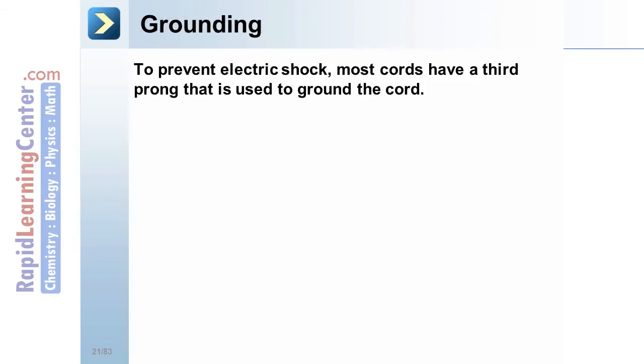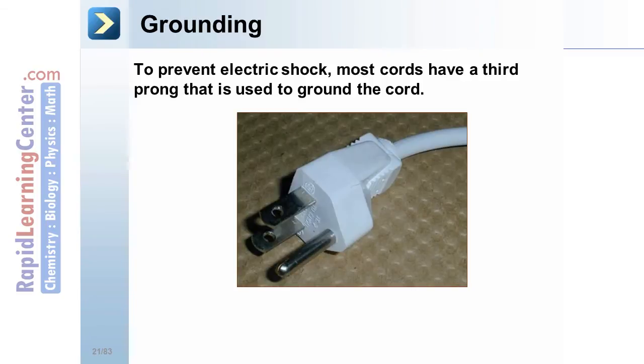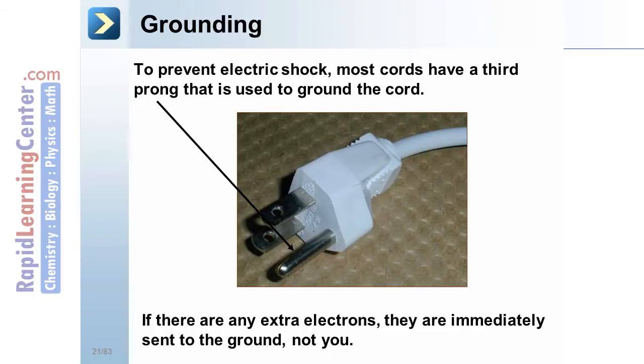Grounding. To prevent electric shock, most modern cords have a third prong that is used to ground the cord. This prong is literally connected to the earth, or the ground, through the wires in the wire and then in the home. If there are any extra electrons, they are immediately sent to the ground, not through you.